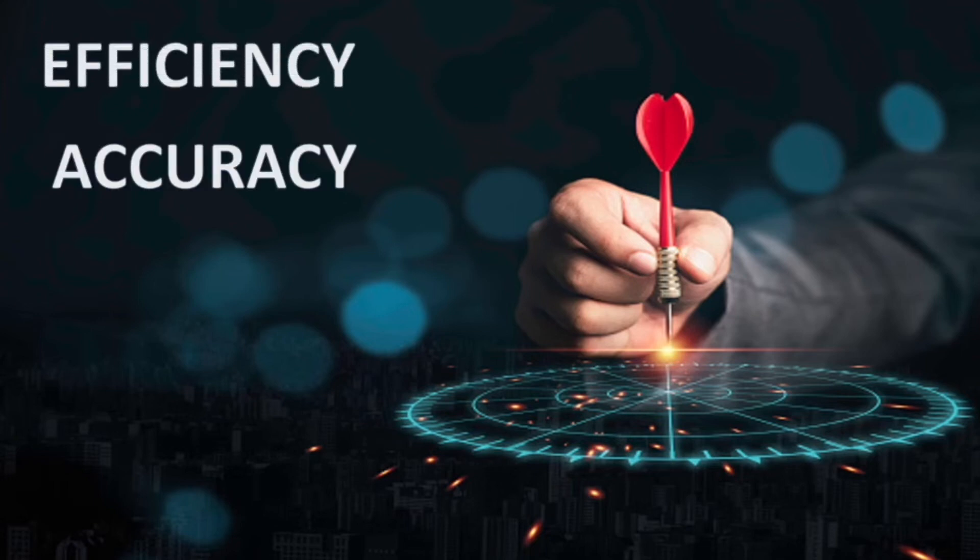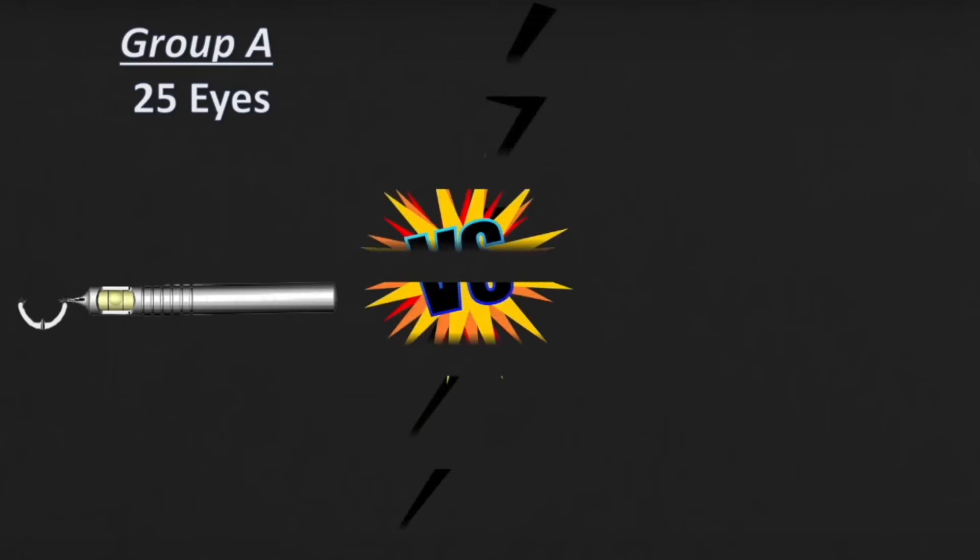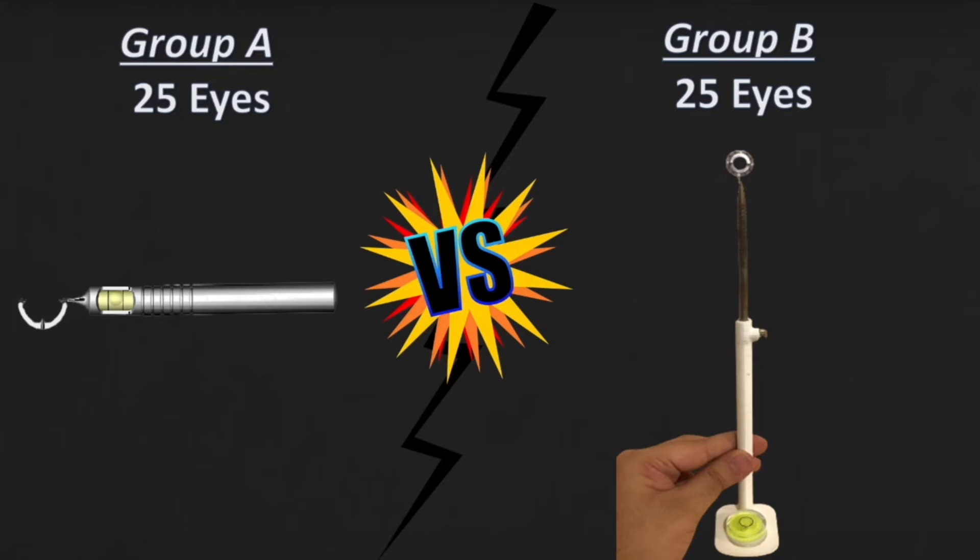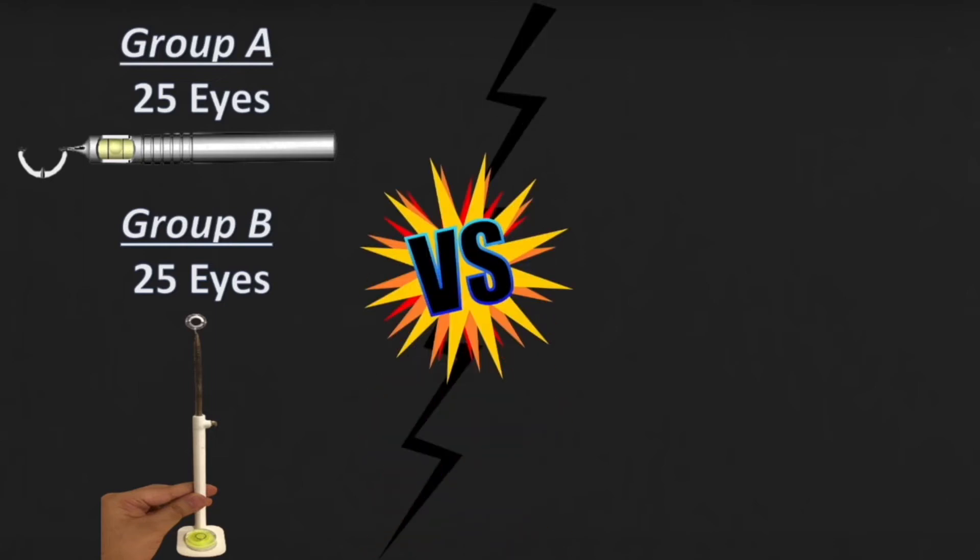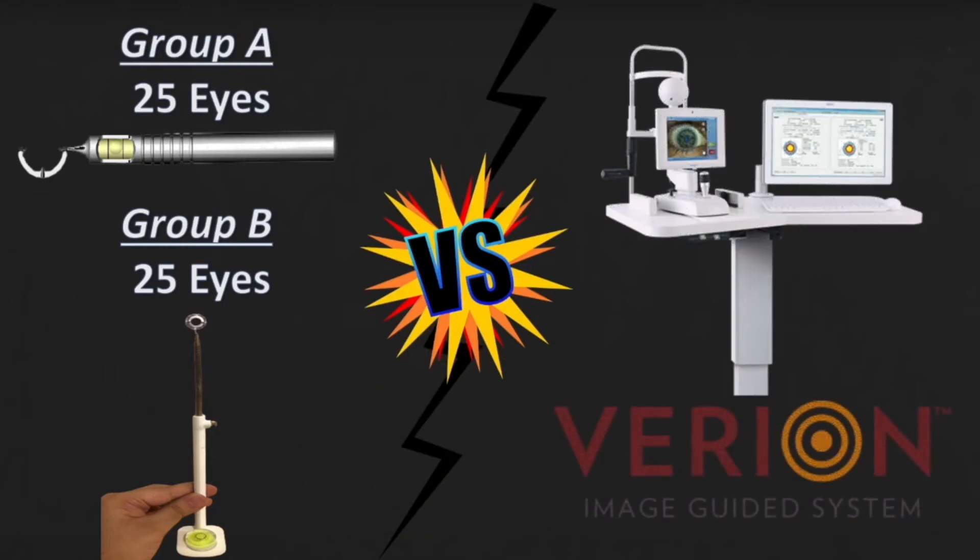Now to study the efficiency and the accuracy of our device, we conducted a simple study wherein Group A, that is 25 eyes, were marked the preoperative axis using the conventional toric marker, and we compared this with our toric marker, 25 eyes. We then took into account Group A, Group B, that is 50 eyes, and compared it with the Verion gold standard image system.